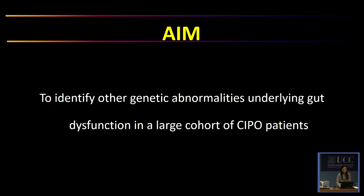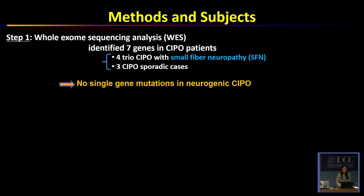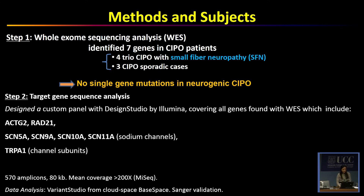The principal aim of this study is to identify other genetic abnormalities underlying gut dysfunction in a large cohort of CIPO patients. We performed two different steps in the methods: first, we performed whole-exon sequencing analysis and identified seven genes in CIPO patients, which include four trio CIPO with small fiber neuropathy and three sporadic CIPO cases, but no single gene mutations in neurogenic CIPO. In the second step, we performed targeted gene sequencing analysis using a custom panel designed with Design Studio by Illumina, covering all genes found in whole-exon sequencing analysis, which include RAD21 and several different sodium channel genes from the SCN family and channel subunits.